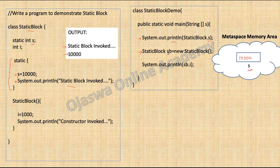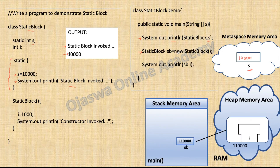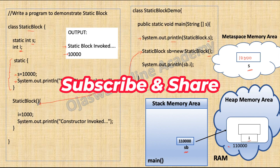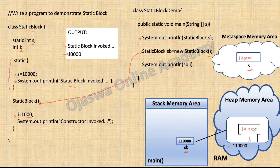Next we are creating an object: StaticBlock sb = new StaticBlock(). A new object is created in memory. Reference sb is created on the stack and the object is created on the heap. There is one instance variable in the class StaticBlock, hence memory for instance variable i is reserved inside the object. As soon as the object is created, a call to the constructor goes. Here we are not passing any arguments, hence an implicit call to the default constructor is given. Control of the program comes to the default constructor, which does not take any arguments. The first statement is i = 1000, so instance variable i is assigned the value 1000, which is stored inside the memory reserved for instance variable i in object sb.